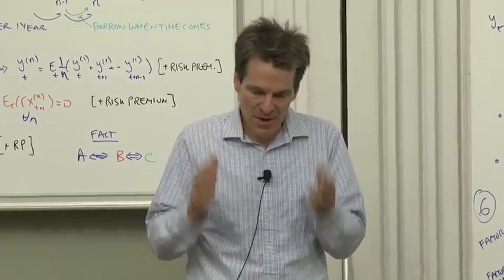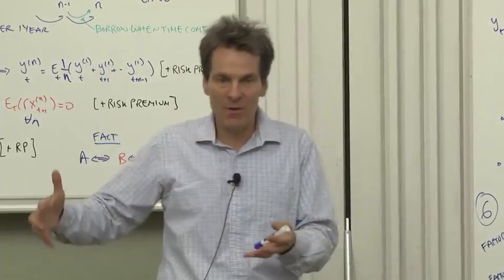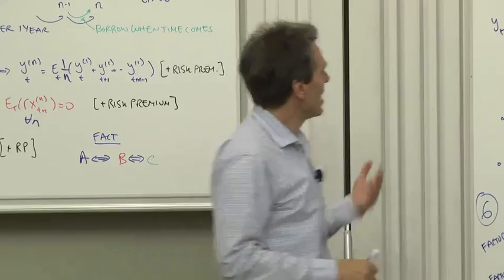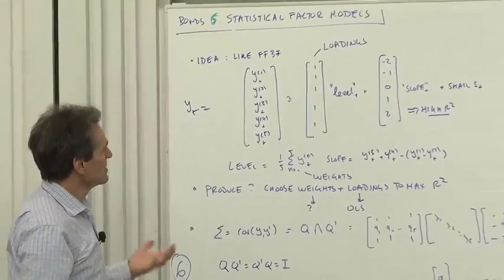Now here's the idea. We saw in the data that the bonds of various maturity all kind of move together. It sort of screams something like a level factor where they all went up and down, and a slope factor where some went up and others went down.